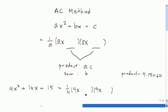We want the sum of these two numbers to be equal to the middle coefficient, the coefficient of x, which is 16, positive 16.